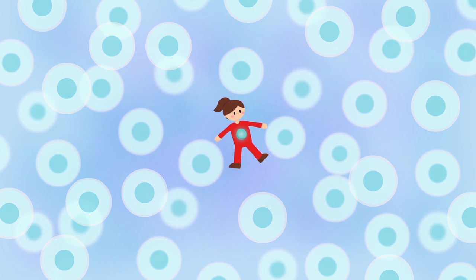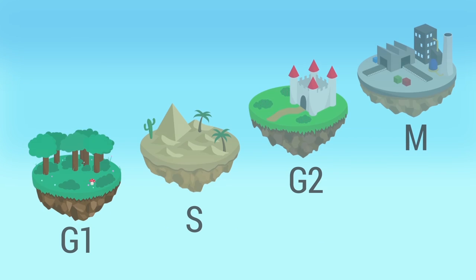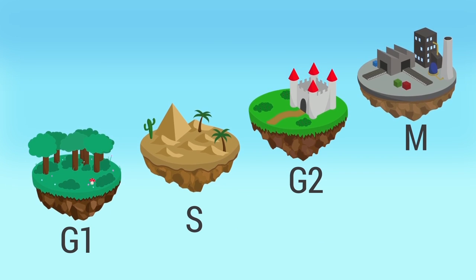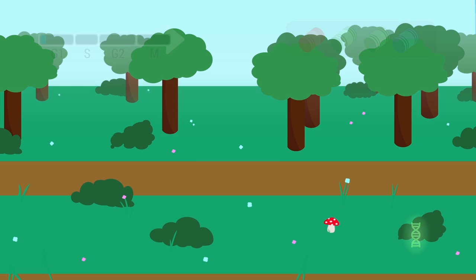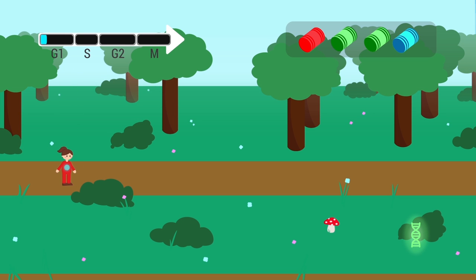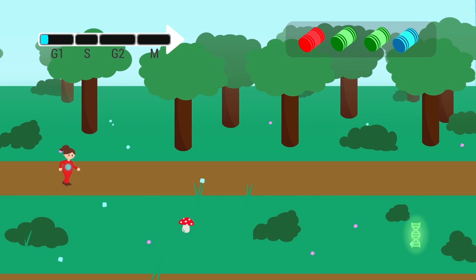Cells enter the cycle in response to growth factors. During the first phase of the cycle, G1 or growth 1 phase, they begin to increase in size and produce proteins and new organelles.